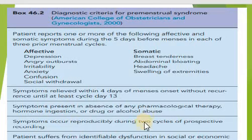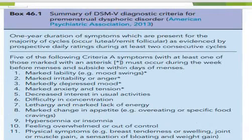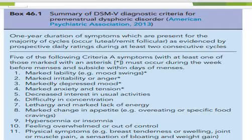The duration of symptoms is the occurrence of symptoms between two cycles in prospective recordings, while in case of dysphoric disorder at least one year of persistent symptoms should be present. One must remember there is a considerable overlap between PMS and PMDD. The difference is that in PMS, SSRIs are usually not prescribed; however, in PMDD, SSRIs are the mainstay of treatment.